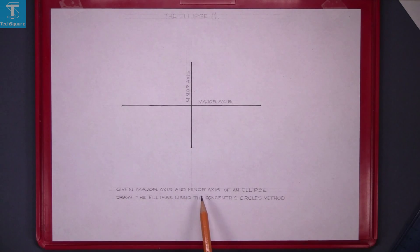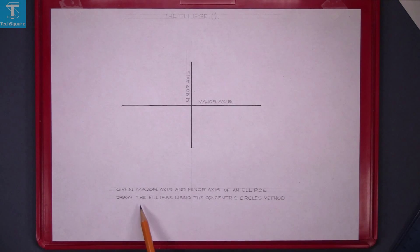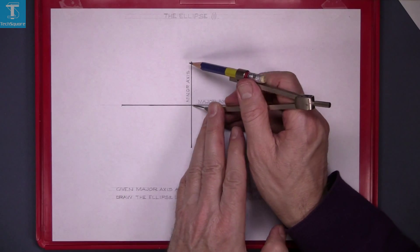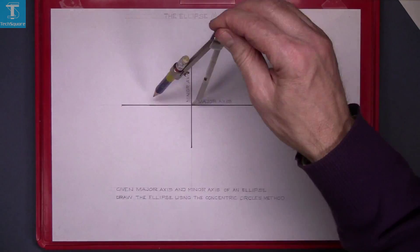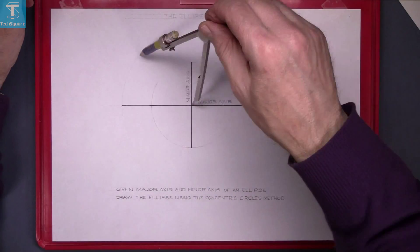Given the major axis and the minor axis of an ellipse, draw the ellipse using concentric circles method. Use the compass, set it to half the minor axis and draw a circle. Now do the same for the major axis. Draw a circle.